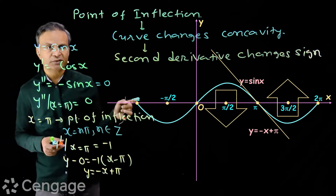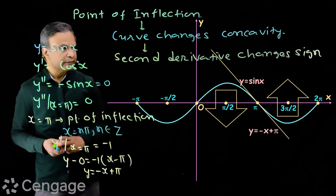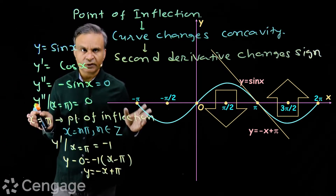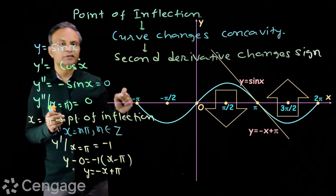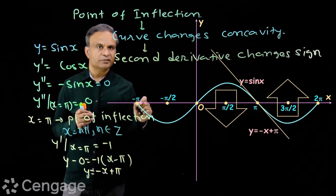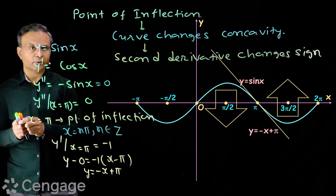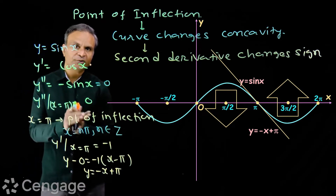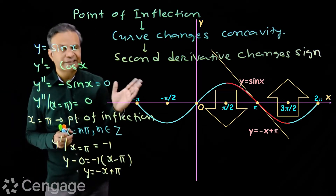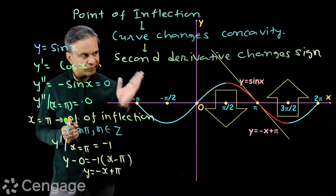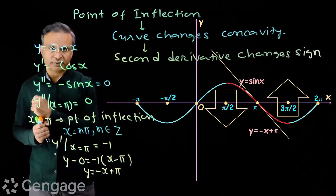This tangent line crosses the curve at x = π. So if the function is differentiable, then at a point of inflection the tangent line will cross the curve. For a differentiable function, the curve smoothly crosses the tangent line at the point of inflection.